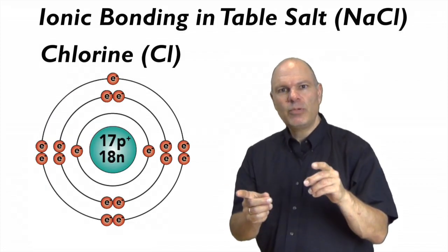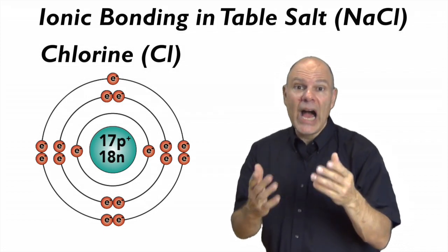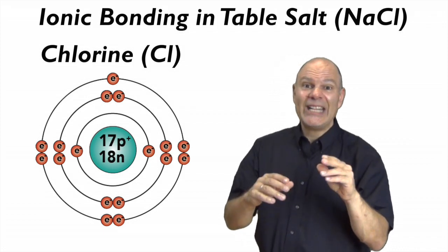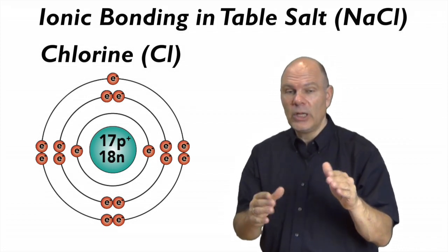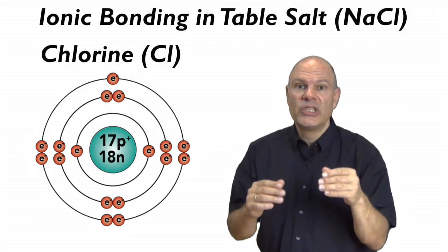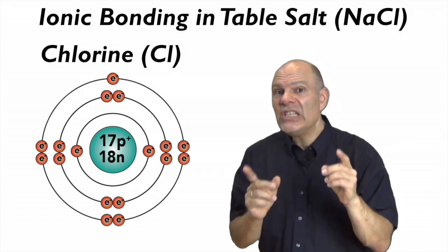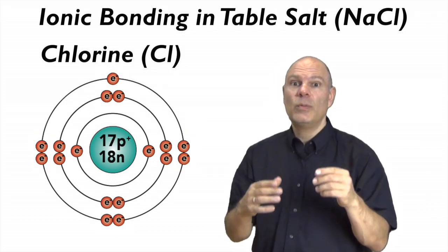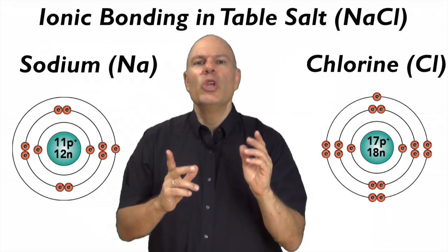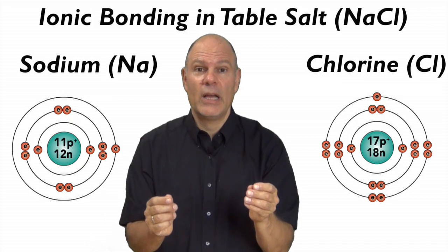Chlorine has 17 protons, 18 neutrons, and 17 electrons. Using the octet rule to draw out chlorine's orbital structure, you can see that it has two electrons in the first orbital, eight in the second, and seven in the third. With seven electrons in that third orbital, chlorine is an unhappy atom. Its easiest move to achieve happiness would be to accept one electron, but who's it going to accept it from? You've probably anticipated that sodium and chlorine were made to be a couple.